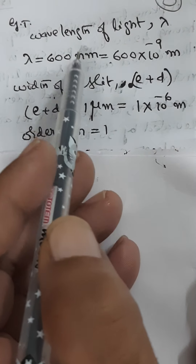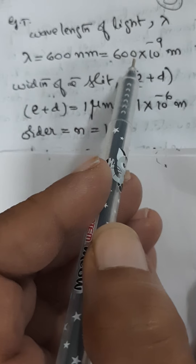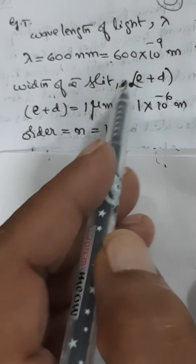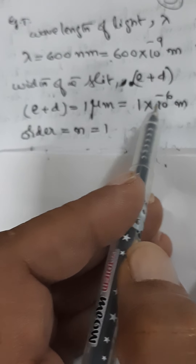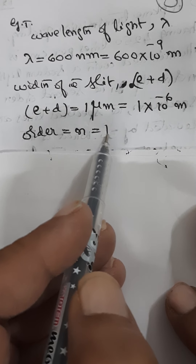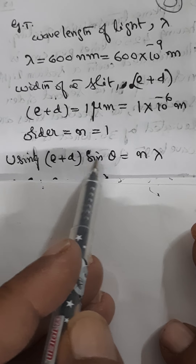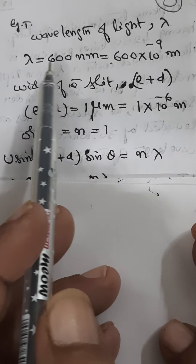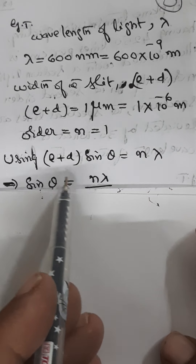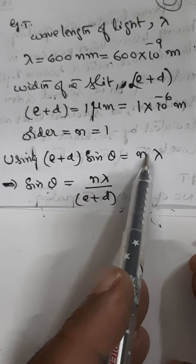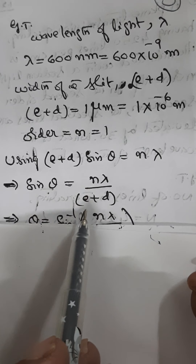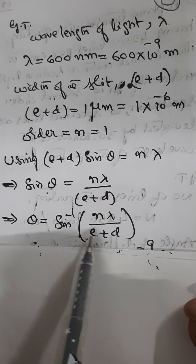So this is the data given. Wavelength lambda is 600 nanometers, which we convert into meters as 600 × 10⁻⁹. Width of the slit, that is (e + d), is given as 1 micrometer, which is 1 × 10⁻⁶ meters. And first order means N equals 1. Using the equation (e + d) × sinθ = Nλ, we can calculate sinθ as Nλ/(e + d). Therefore, theta equals sin⁻¹(Nλ/(e + d)).